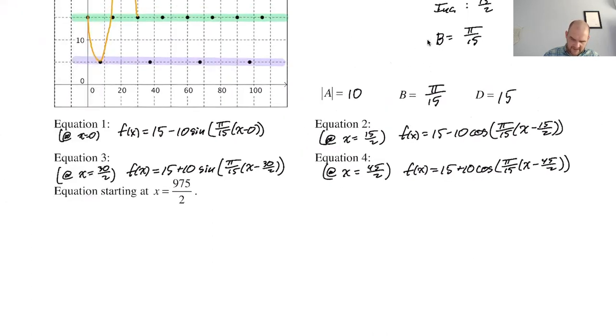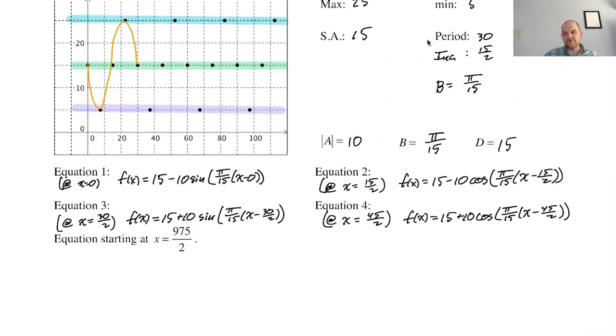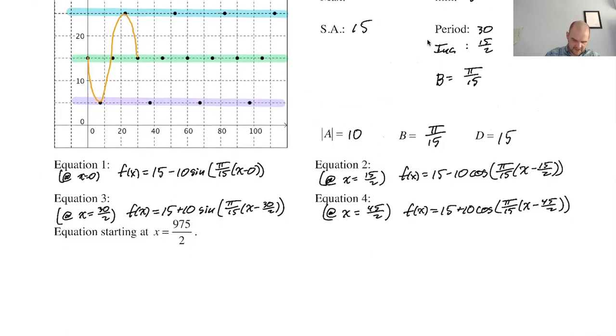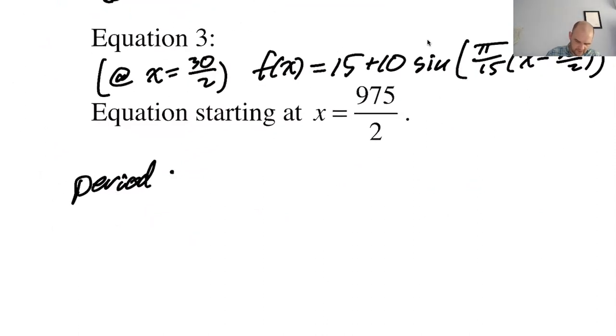All right, so far so good. Now we have this nonsense, 975 over 2. So what is that? 975 over 2, period is 30. So 30 is 60 over 2. All right, so the period, I mean, I could just divide by 30 and do 975 divided by 60 and work out what that is. But I prefer to do it in a weird way, so 30, which is 60 over 2.